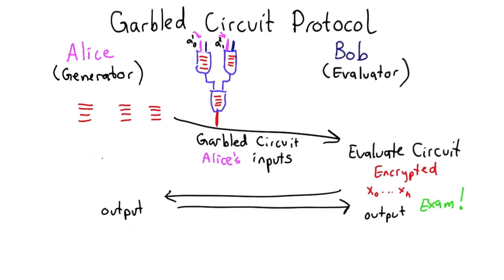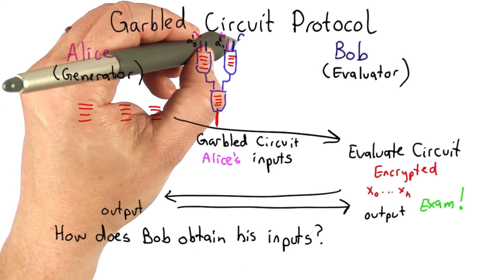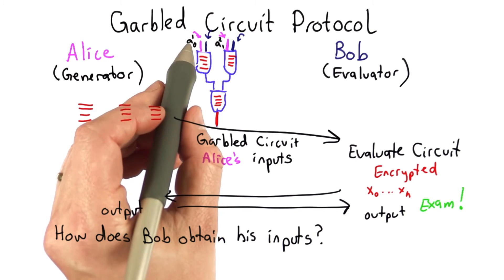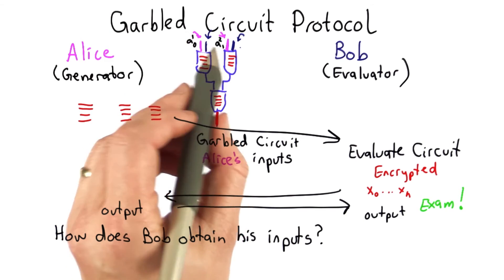But there is one more question that I do need to talk about. That's the question of how does Bob obtain his inputs to the circuit. To evaluate these tables, Bob needs to know both Alice's inputs and his inputs.